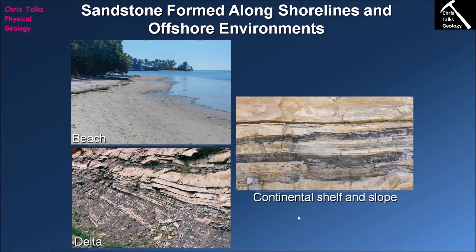The final environment where we would expect to find sandstones forming in large quantities is on the continental shelf and continental slope — environments which are constantly submerged and in a marine, salt-water setting. Sands don't just appear at beaches; they actually continue a long way off the coast underwater, and these sandy sediments are constantly covered in saltwater, so we classify them as marine. The continental shelf is between zero and 200 metres deep, and once you get to the edge of the shelf you drop down the slope, which is a rather steep area of seafloor.